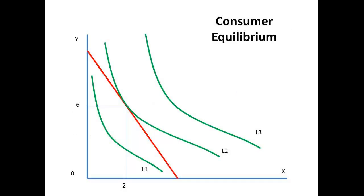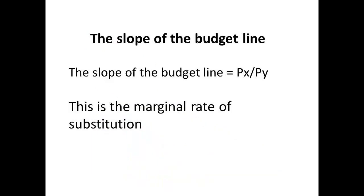Here we are placing the indifference map and the budget line on the same map. The significant point is where the budget line is tangent to an indifference curve. The curve L2 represents the highest curve that can be reached. Point A is known as the consumer equilibrium point — the point at which the consumer will be maximizing their utility subject to budget constraint. The slope at this point, px divided by py, will represent the marginal rate of substitution.